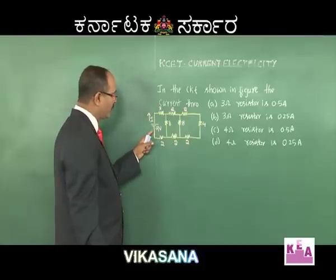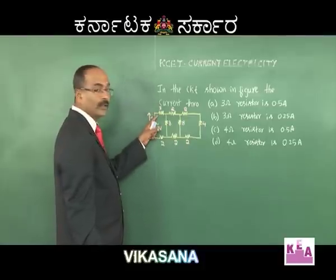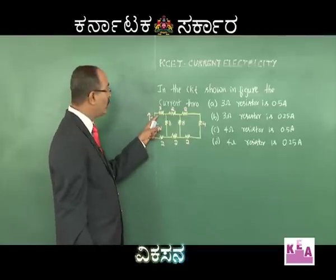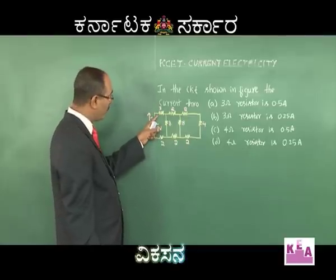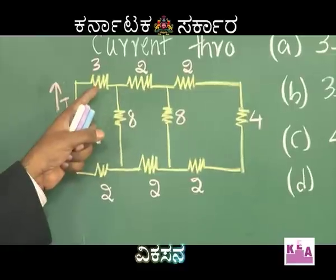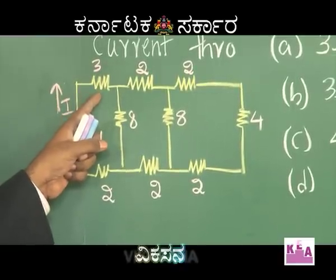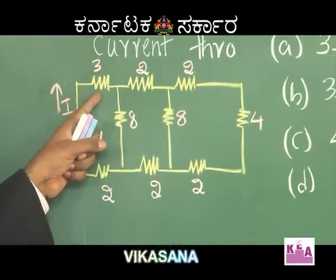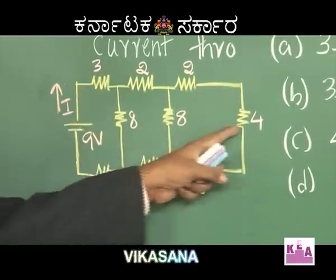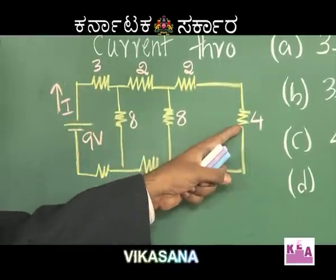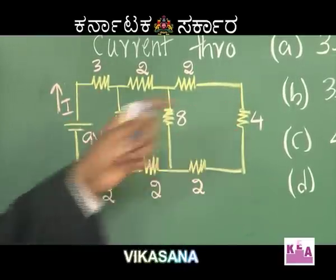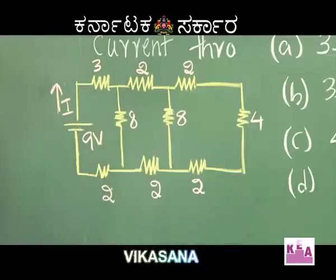Look at this circuit. The question is: current through 3 ohm is 0.5 — that is option one; current through 3 ohm is 0.25 — that is the second option; 4 ohm is 0.5 and 4 ohm is 0.25 — these are the four options given.